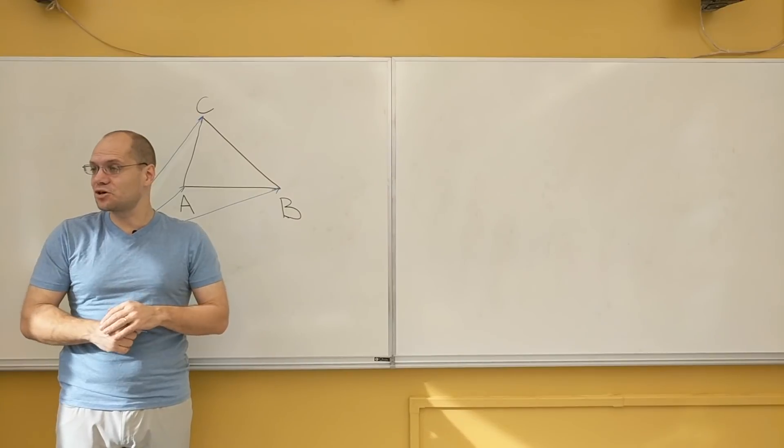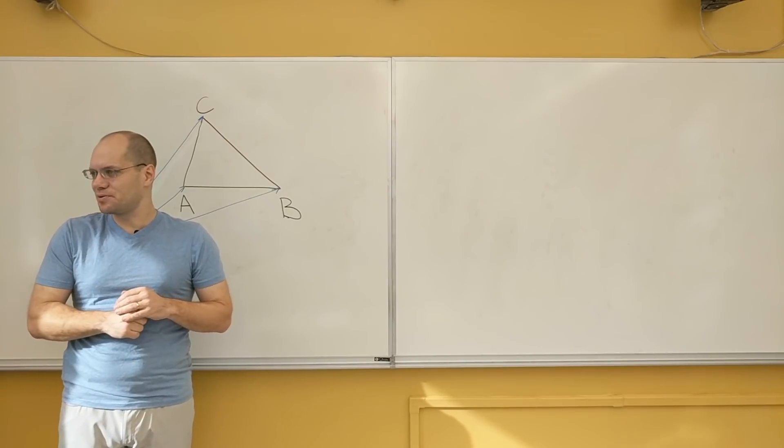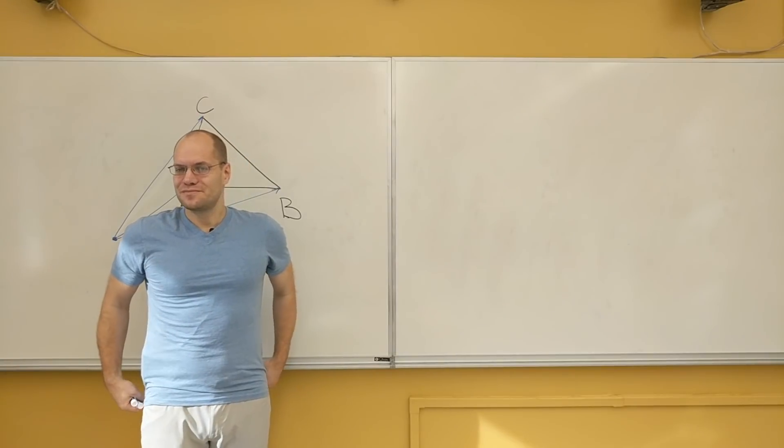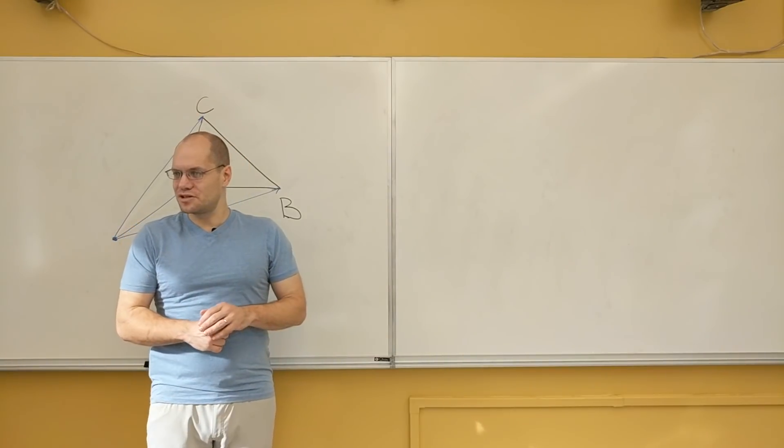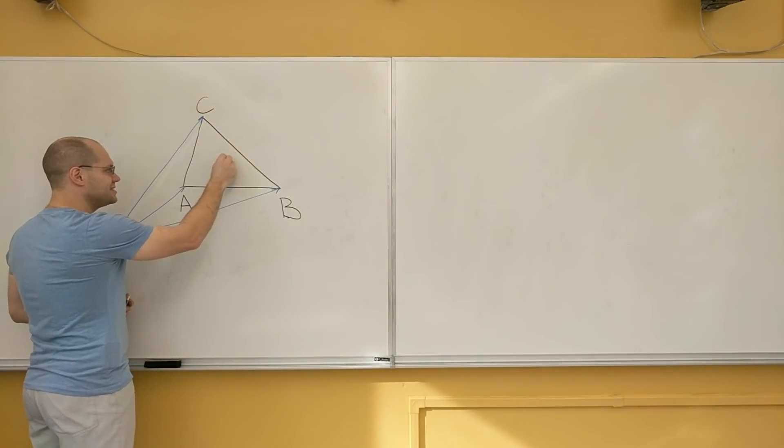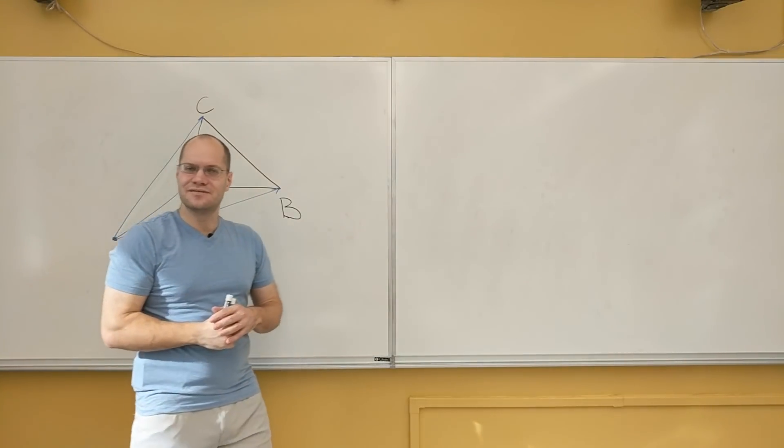We're now going to talk about the bisector of an angle in terms of the dot product. Very important applied problem. If you're doing anything having to do with computer graphics and you want to put something on the bisector of A, well, how do you calculate it?